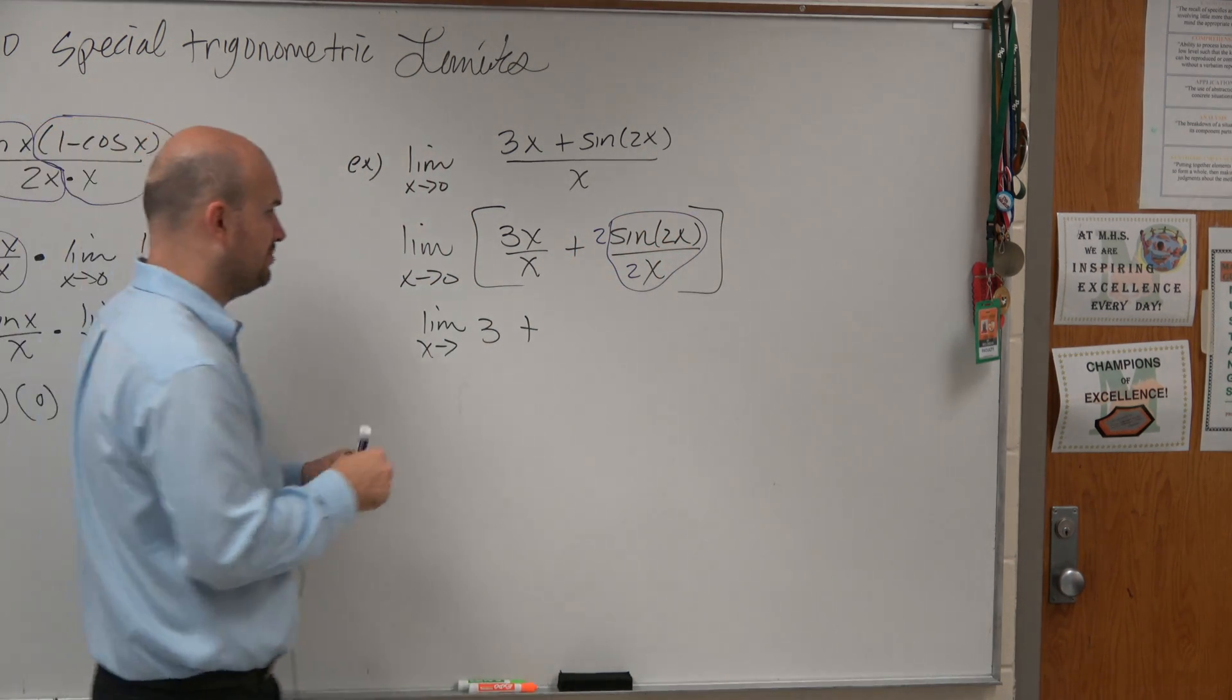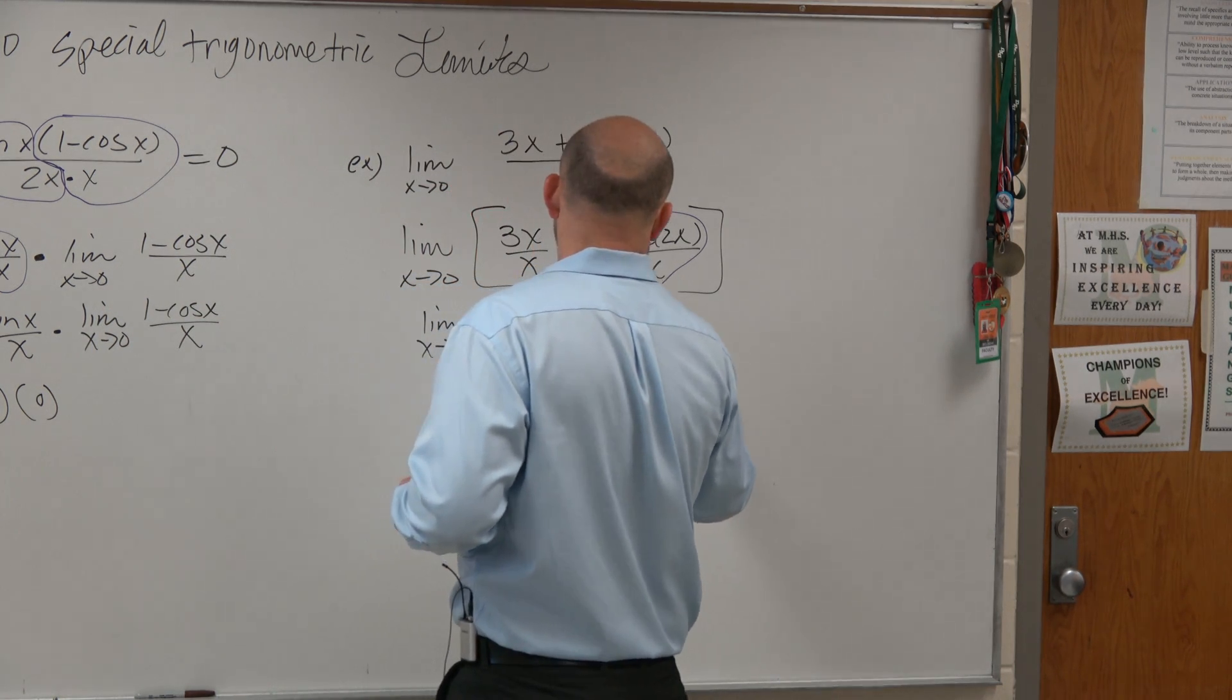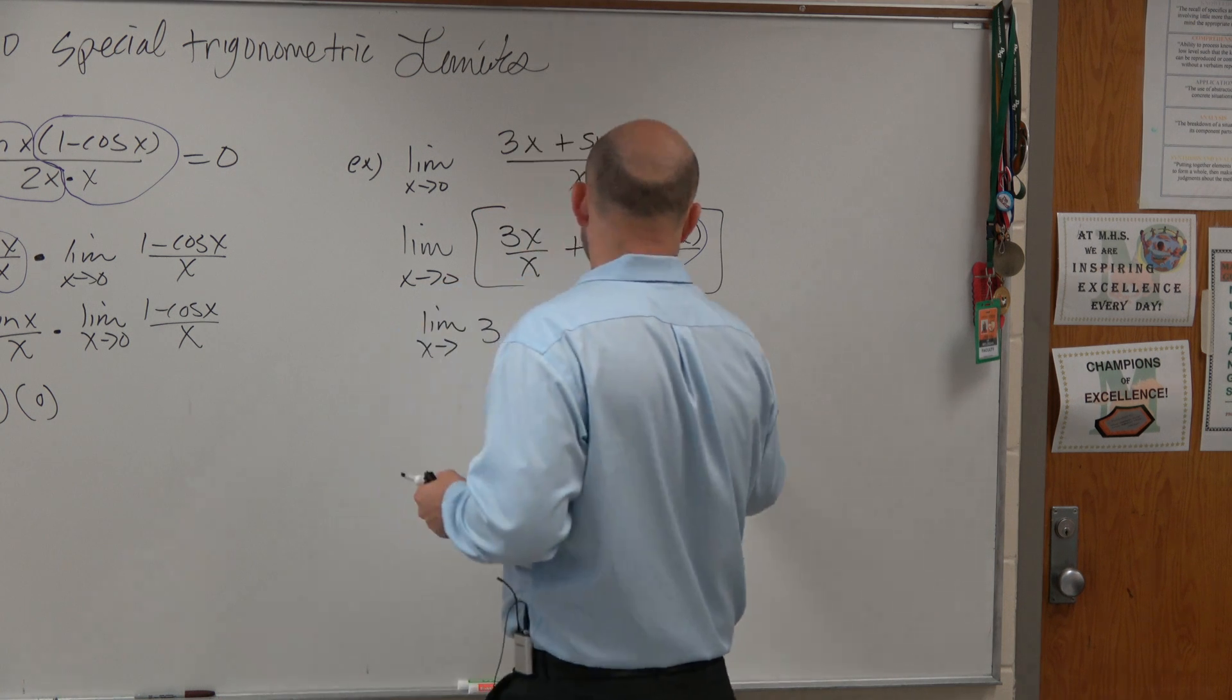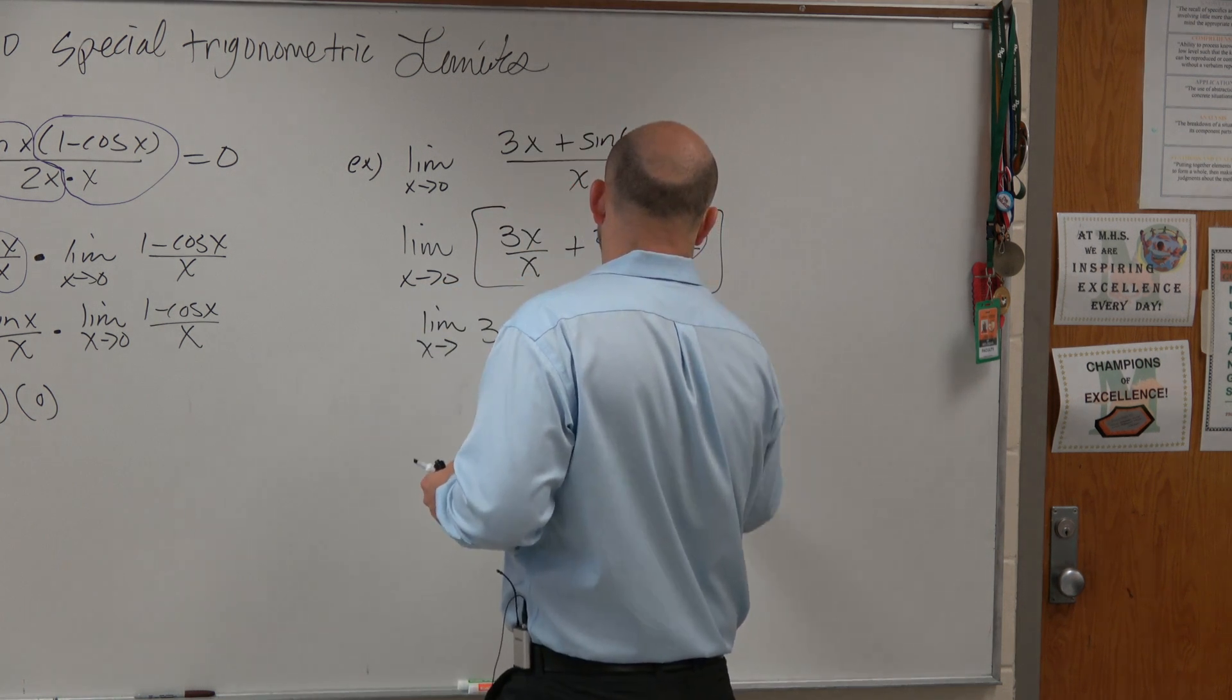So then I'm left with plus 2 times the sine, now let's do it purple, so you remember where it came from, plus 2 times sine of 2x over 2x.